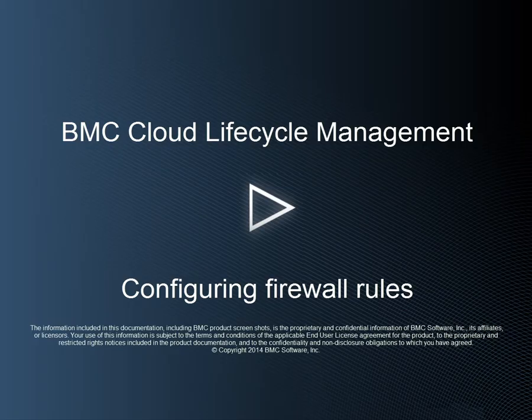In this final brief tutorial, we will configure firewall rules on our WAMP stack. We will configure the network paths in the blueprint to allow the web server to communicate with the database server on port 3306.